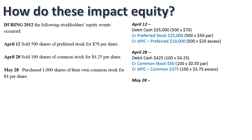On May 28th we purchased 1,000 shares of our own common stock for $4 a share — hopefully this makes you think of Treasury stock right away. We create our own cost basis for this layer of Treasury stock: 1,000 shares at $4 gives us a $4,000 basis. So we debit Treasury stock and credit cash.